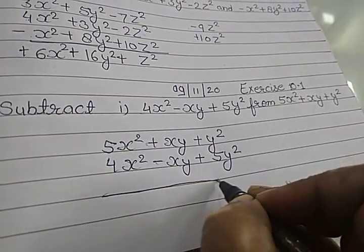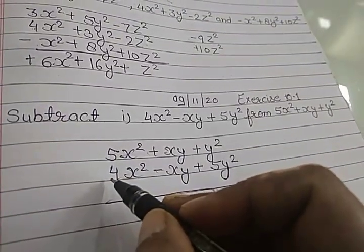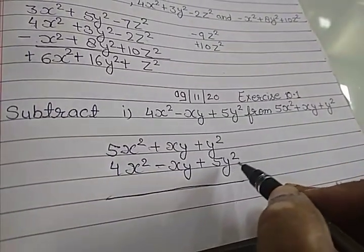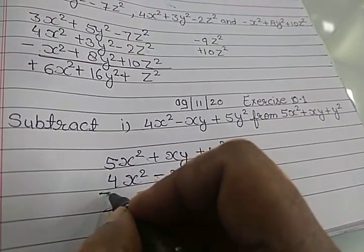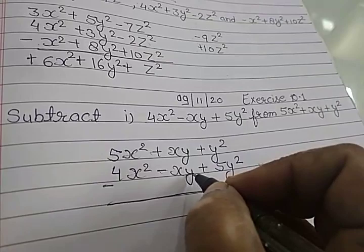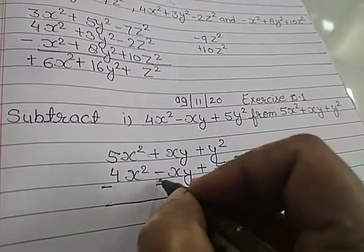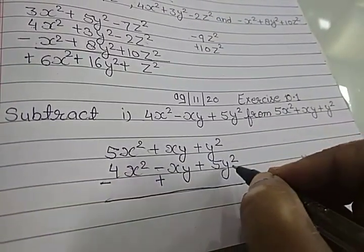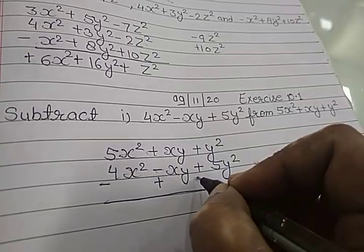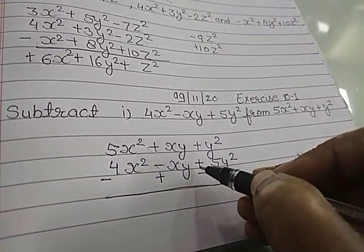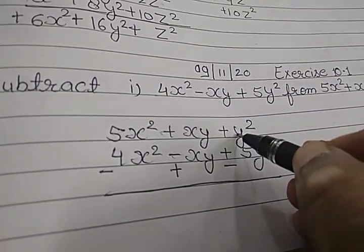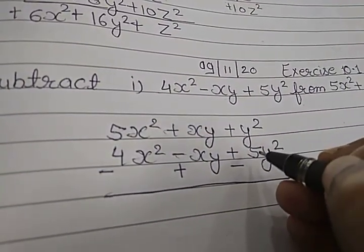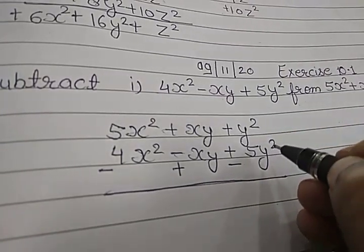So here, this 4 is of plus, we will write here minus. xy is of minus, so we will write here plus. 5y² is of plus, so we will write here minus. Now we will use only this and this sign: plus minus minus.